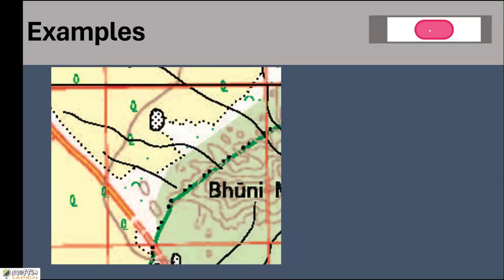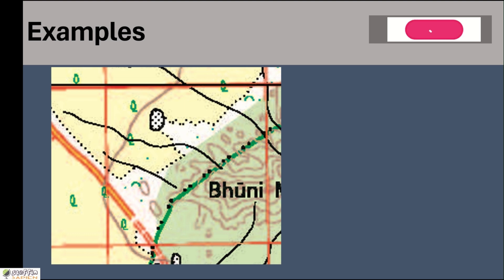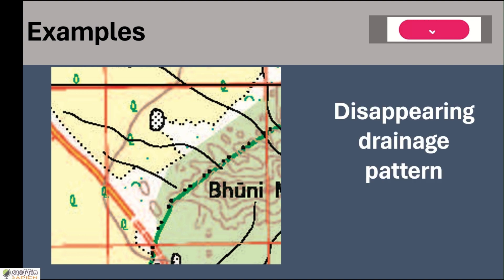Here, within this complete grid square, we have at least three main rivers. All of them are starting from the hilly area in the southeast — we can see the presence of contours indicating hilly area. They are flowing towards the north and northwest, and they disappear after flowing a few meters. These are examples of disappearing drainage pattern.